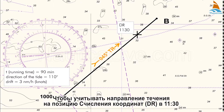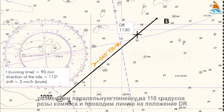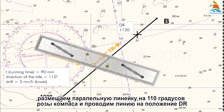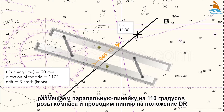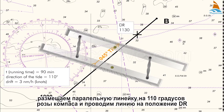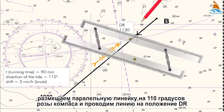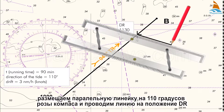To apply the set — the direction of the tide — on the 1130 Dead Reckoning DR position, we place the parallel ruler on the 110 degree line of the compass rose and transfer that line to the DR position.